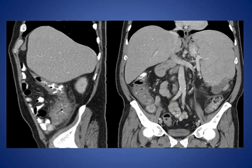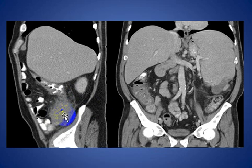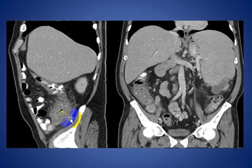CT in general shows thickening of the cecum, as we see here. It may extend to the ascending colon or terminal ileum, associated with fat stranding and thickening of the overlying fascia or peritoneum. Sometimes we have pneumatosis intestinalis. Features of small bowel obstruction may also be seen, as well as intramural areas of low or high attenuation due to hemorrhage.